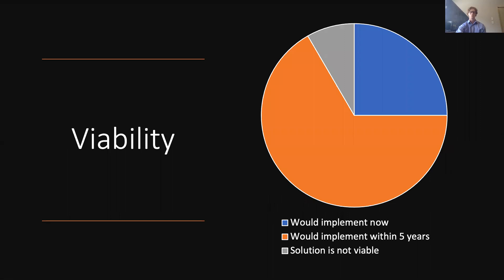From the interviews, 25% of the participants would implement the system now. 67% would implement the system in the next five years, and only 8% of the participants did not think that the solution was viable and did not see it as working as part of the last planner system.